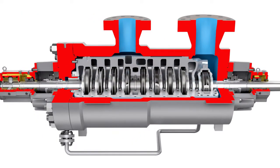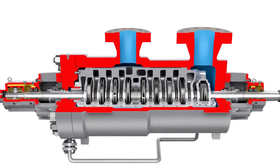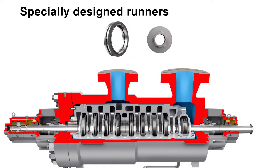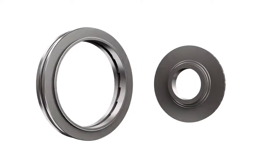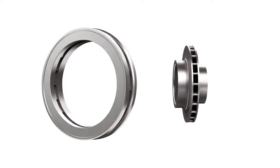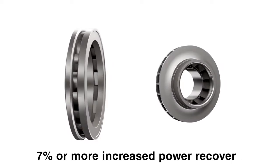Traditional HPRTs, which are essentially pumps running in reverse, may not be able to take advantage of this. But by employing a turbine design that can accommodate the change in volumetric flow rate, operators can recover the additional power in the fluid stream. This optimised turbine is created by replacing impellers with specially designed runners and nozzles. The additional vanes and fluid passages, along with optimised inlets, increase fluid acceleration. This allows for even greater power recovery, often 7% or more, than traditional HPRTs.